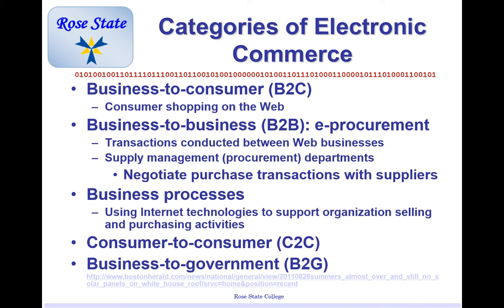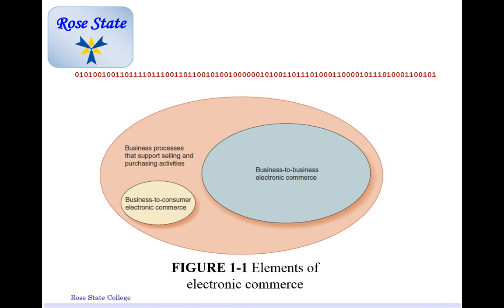That's e-procurement, business processes. We can also do customer to customer, which is C2C, or business to government. And what about C2G — consumer to government? Everybody raise your hand — you are one. Because this building, this school, is a government agency. You are a consumer.